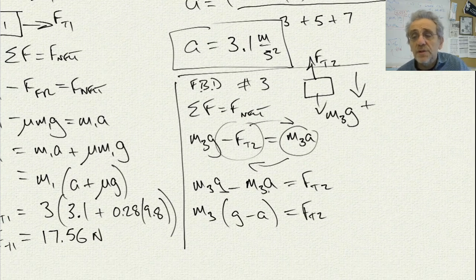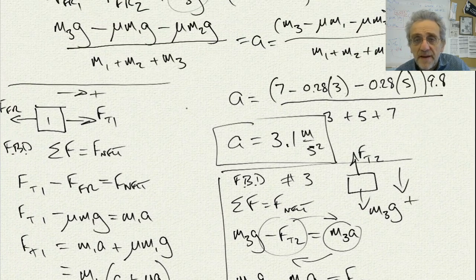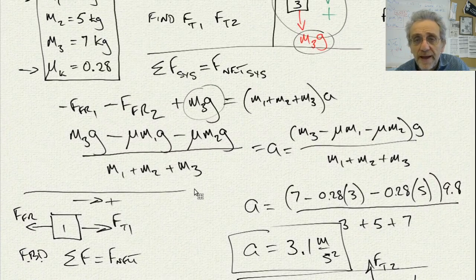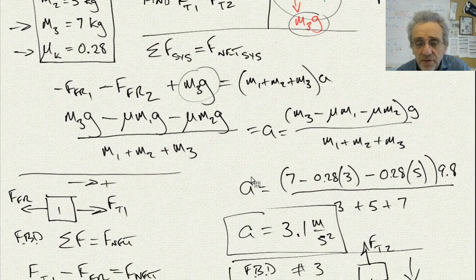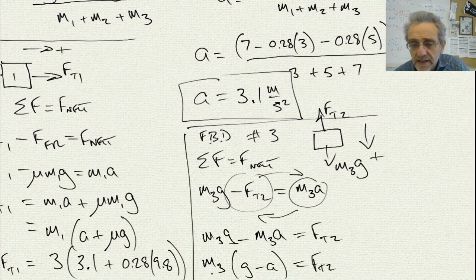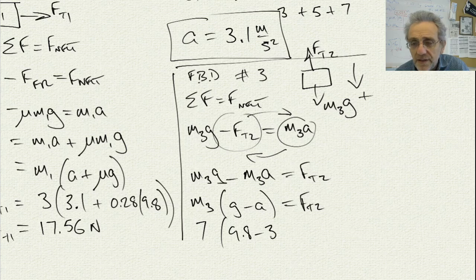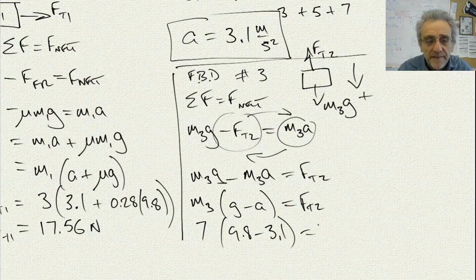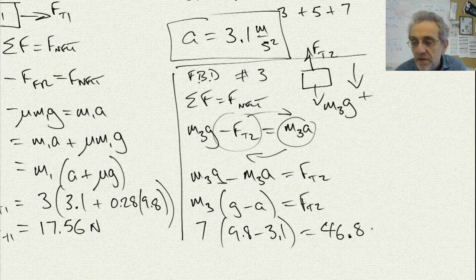Now that I have the equation, let me put in my values. And if I recall back up here, M3 was 7 kilos. So I'll say 7 times 9.8 minus 3.1. And I'll get the answer of 46.8 Newtons.